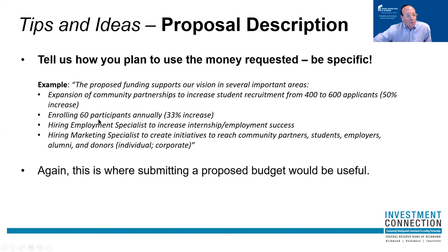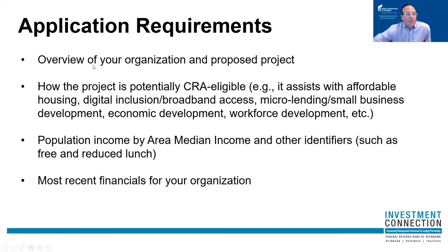My largest pet peeve: get to the point of how you plan to use the money. I can't tell you how many organizations ask for half a million dollars and never get around to actually saying in even one sentence how they plan to spend the money. Please include a sentence that says how you actually plan to use the money, not just the overall need it might address — and that's where a budget could be helpful. Say 'I'm going to use the money to enroll 60 participants, hire an employment specialist, buy supplies, or expand the program.' To summarize a complete application: overview of your organization and proposed project, how you're serving a CRA activity, connecting the dots on how you're serving a low and moderate income community through census tract data, and your financials.